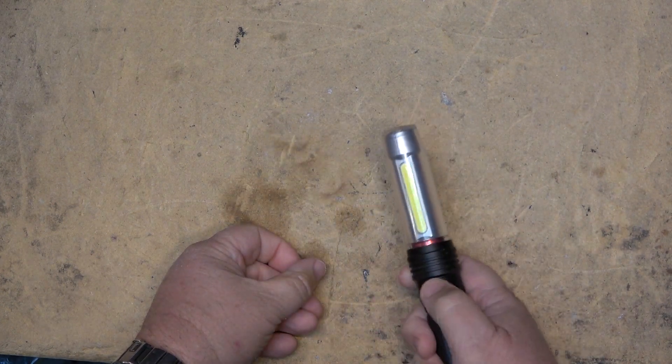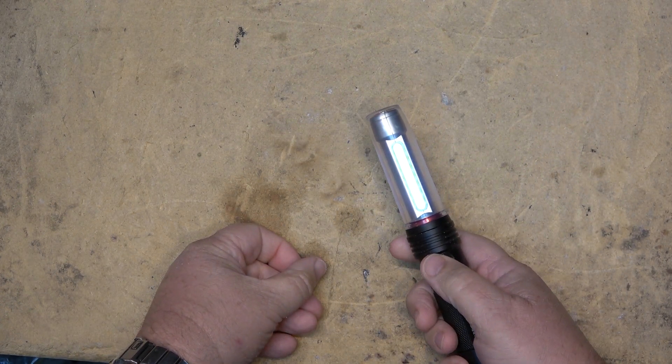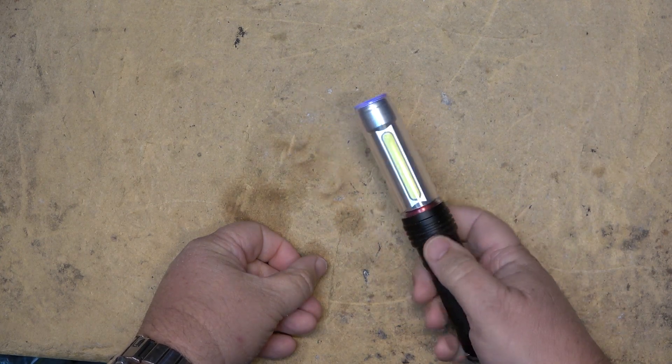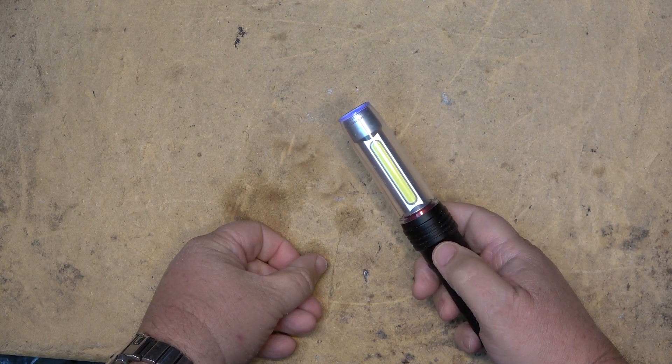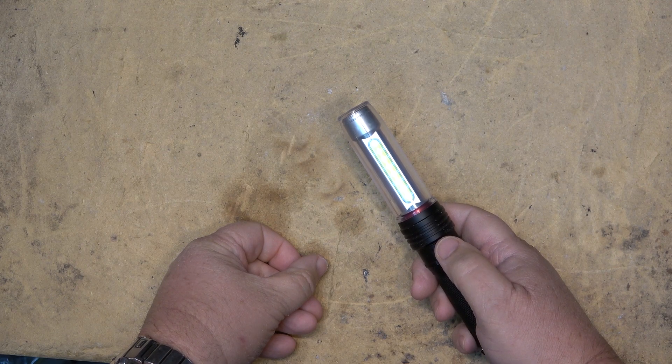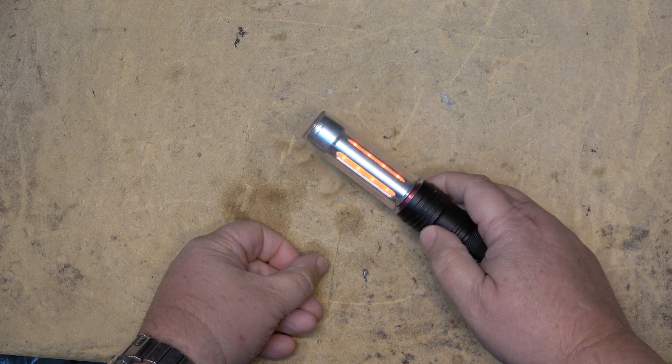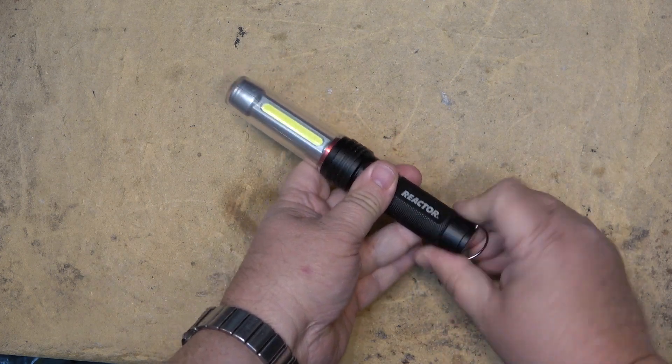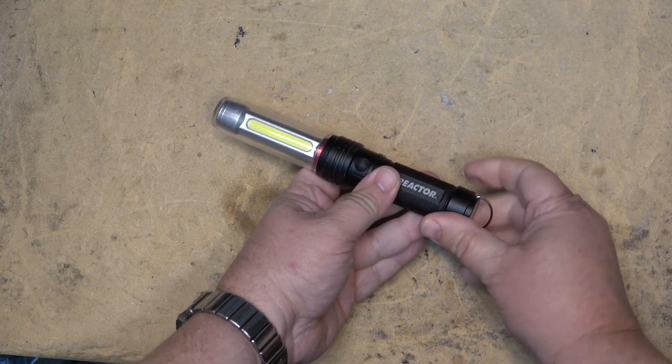The batteries run out on them so quick because they just chew through. Like see, it just changed modes there on its own, but the batteries run out so quick because they use AAA batteries. Here's something that a lot of people don't know that you can do to these.